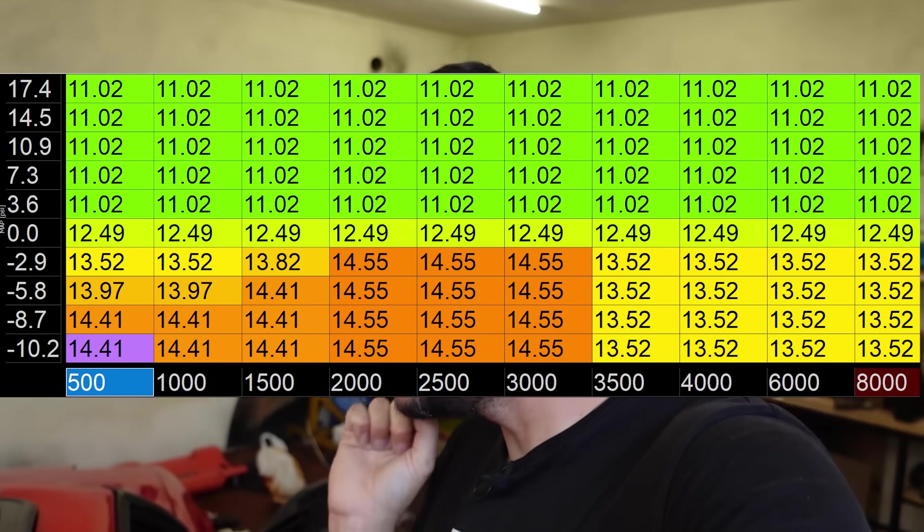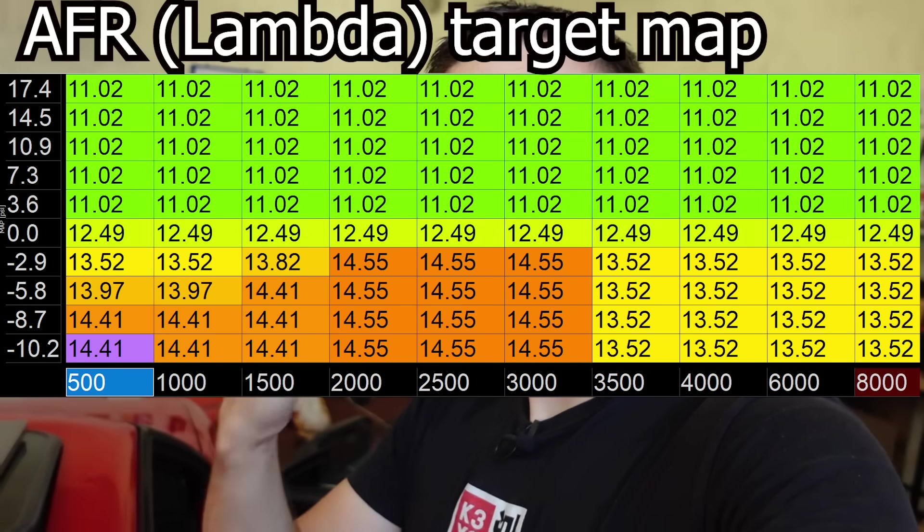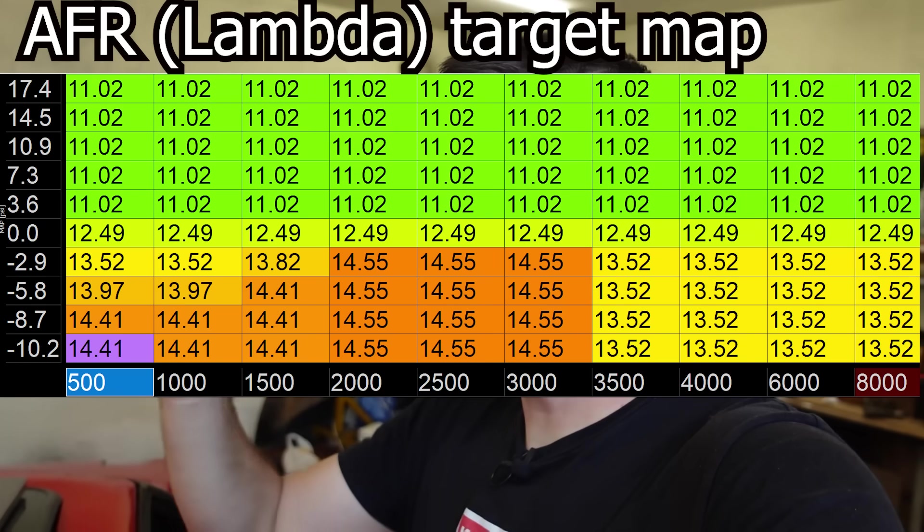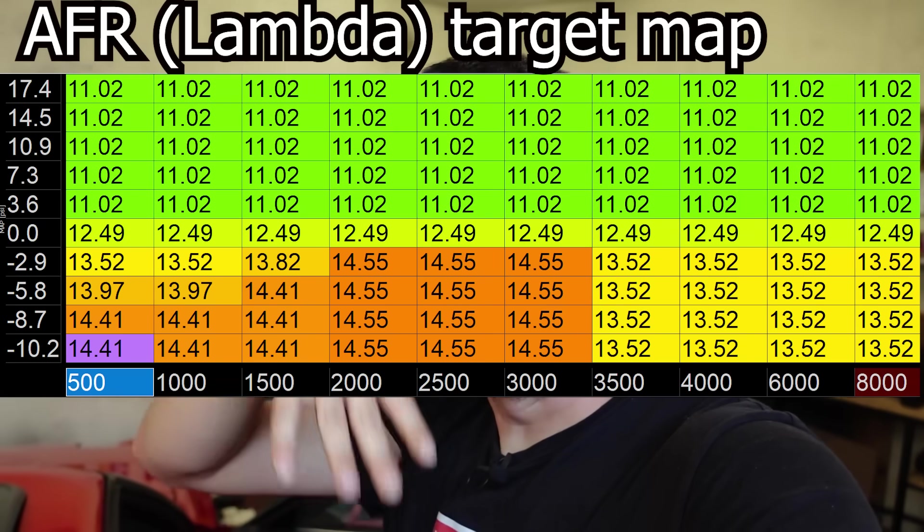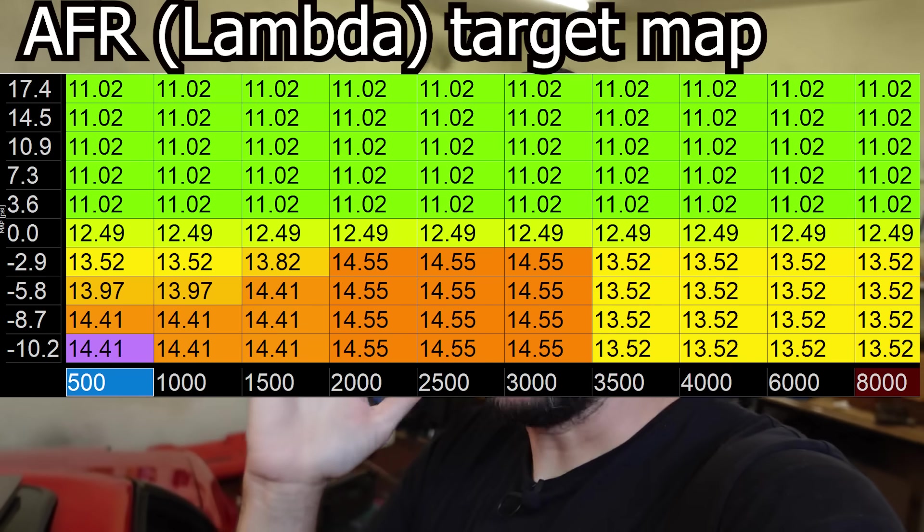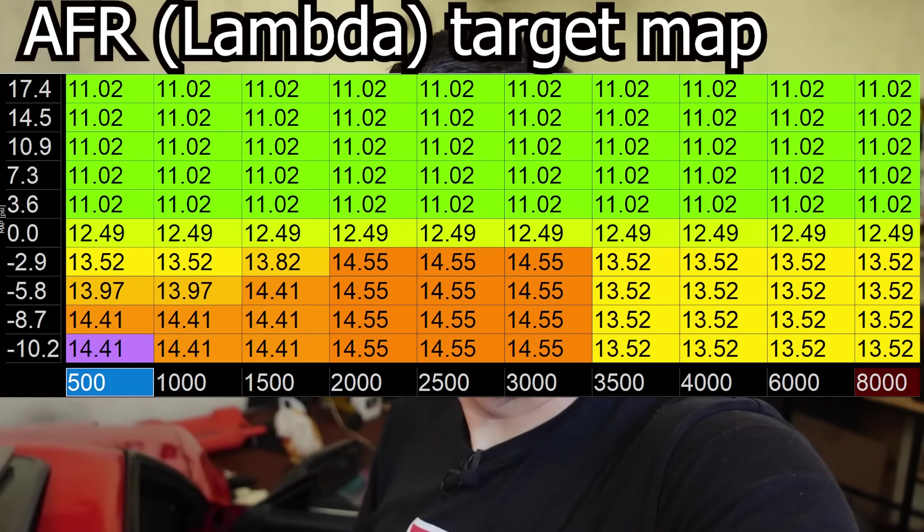And in addition to the wideband sensor, the only other thing you need is this. And this is perhaps the most universal map ever. It's called a lambda target or air fuel ratio target map. These are your target air fuel ratios. This is what you want to run at different engine RPM and load intersections. And this very map, the very same map, is applicable, I think, to pretty much any gasoline engine out there.